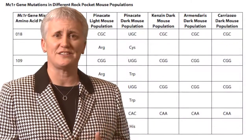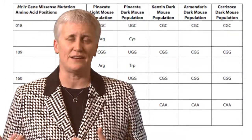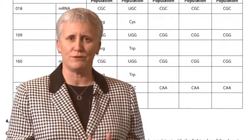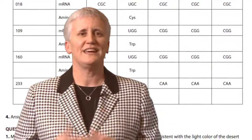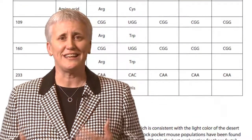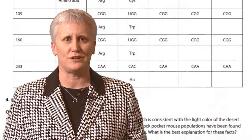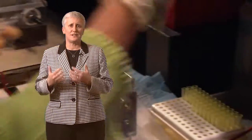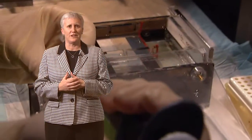The third activity has the students analyze amino acid data from different rock pocket mouse populations, showing that different mutations in different genes can lead to the same phenotypic change. I use the film and activities in both my AP Biology and my dual credit college biology classes after I've covered biochemistry, cell communication, and molecular genetics.